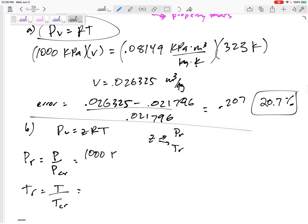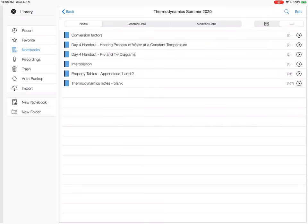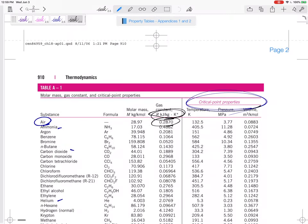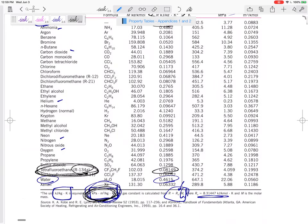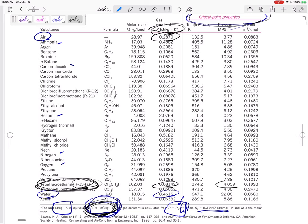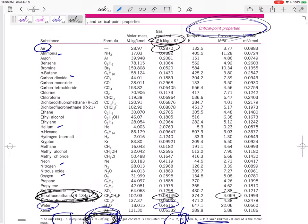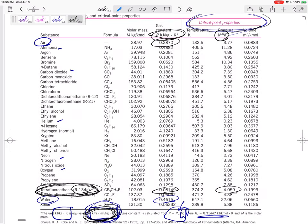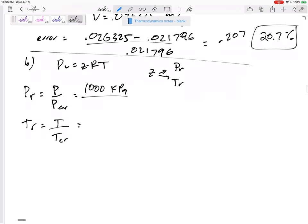So the pressure of 1000 kPa over P critical. That's table A1. The critical point properties for R134a. The pressure is 4.059 MPa. Maybe I should have kept it in MPa. 4.059. And the temperature is 374.2 Kelvin. So this is 4059 kPa. I could have just left those as MPa. 1 over 4.059. 0.246 is PR. The temperature is 323 over 374.2. 0.863 is TR.